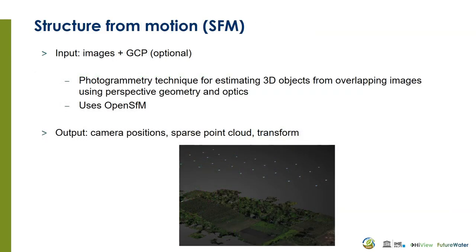The next step is structure from motion. It uses the images and the optional GCPs that we don't use in our case. Structure from motion is a very advanced photogrammetry technique for estimating 3D objects from the motion of overlapping images, and it uses perspective geometry and optics for that. An open source tool, OpenSFM, is used in this case. The output is the camera positions, the sparse point cloud, and transformations. On the picture you can see the camera positions.